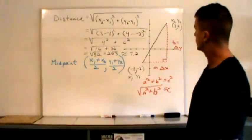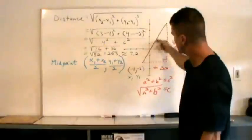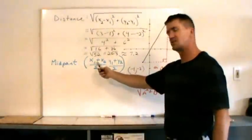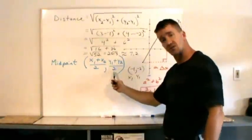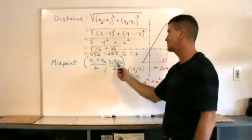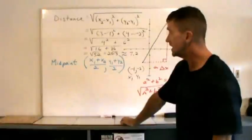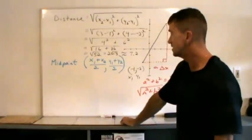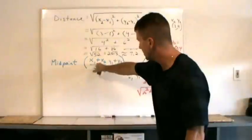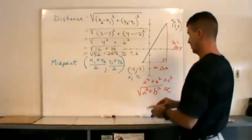Now let's find the midpoint, which would be somewhere in the middle of this segment. It's the average of the x's, comma the average of the y's: x sub one plus x sub two over two, and y sub one plus y sub two over two. That's another way to read the midpoint coordinate — it's the average of the x's, comma the average of the y's.